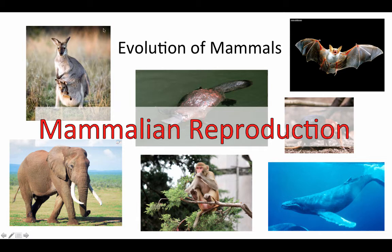The second lineage is the marsupials, which include kangaroos and also most of the rest of the mammalian diversity in Australia. And then the third lineage is the placental mammals, or the eutheria, which includes most of the mammals that you know — the mammalian diversity pretty much throughout the rest of the world outside of Australia.